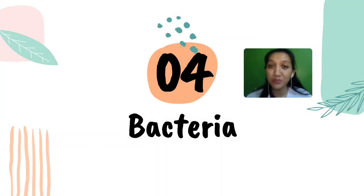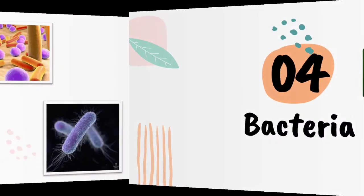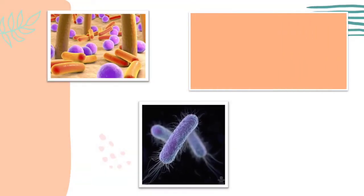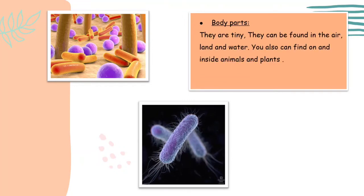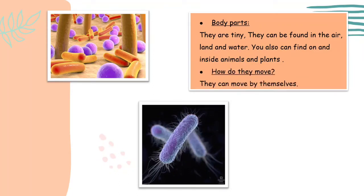Now let's talk about the fourth group: bacteria. Bacteria are tiny living things — we need a microscope to see them. Bacteria can be found in the air, on land, or in water. They can even be found on and inside animals and plants. Bacteria can be long and thin or shaped like coils.